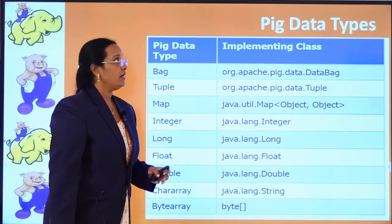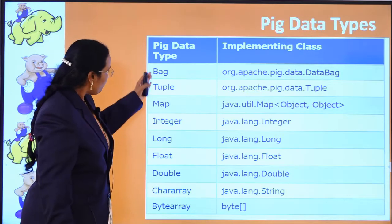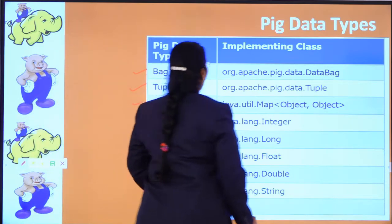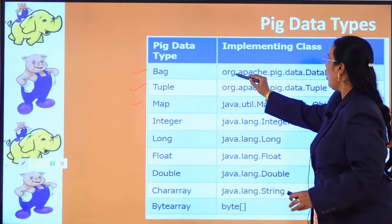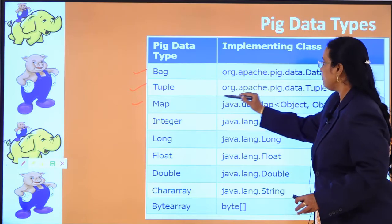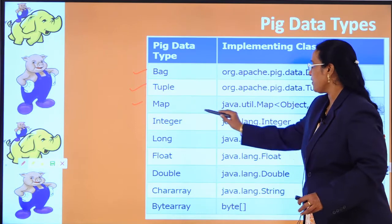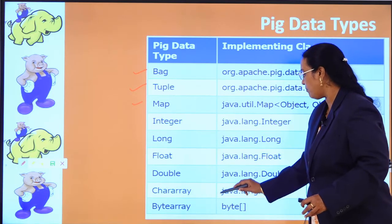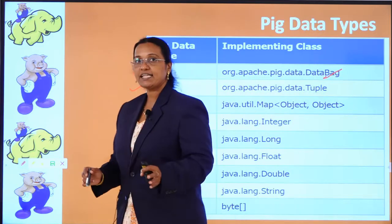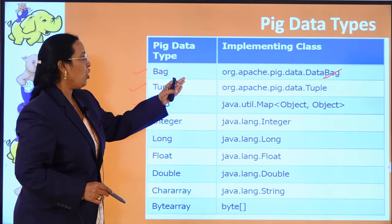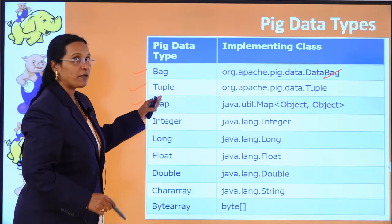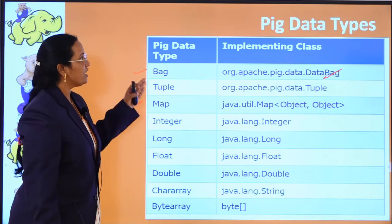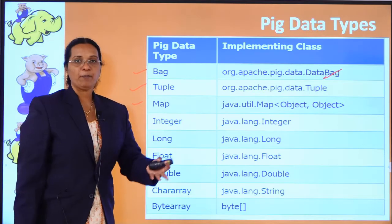Now let us see about PIG data types. PIG provides data types including bag and tuple, which are present in the org.apache.pig package. Map is present in the Java util package. Integer, long, float, double, char array, and byte array are all present in the Java lang package. These are the PIG data types we will be using in our upcoming programming exercises.